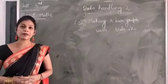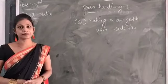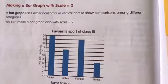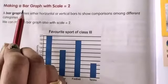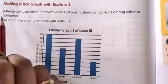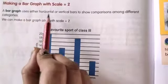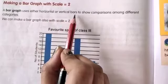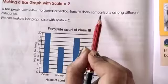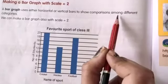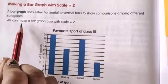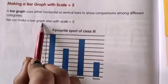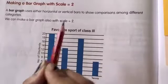So children, all of you open your maths reader, page number 178, making a bar graph with scale 2. A bar graph uses either horizontal or vertical bars to show comparisons among different categories. We can make a bar graph also with scale 2.